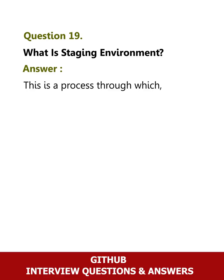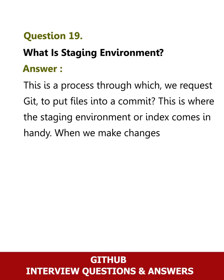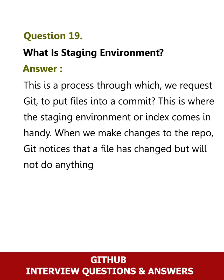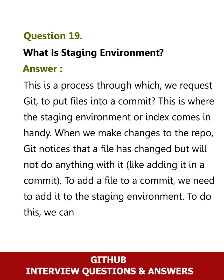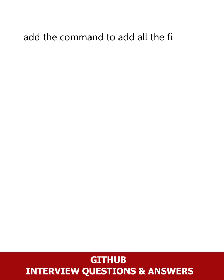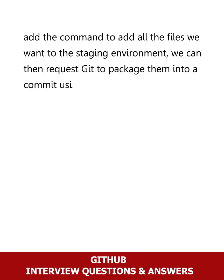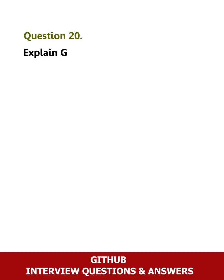Question 19: What is a staging environment? Answer: This is a process through which we request Git to put files into a commit. This is where the staging environment or index comes in handy. When we make changes to the repo, Git notices that a file has changed but will not do anything with it. To add a file to a commit, we need to add it to the staging environment using the git add command. Once all files are added, we can request Git to package them into a commit using the git commit command.